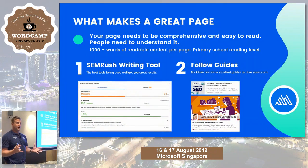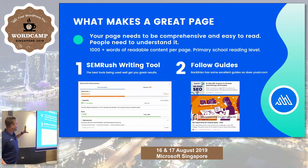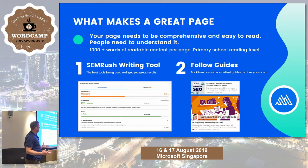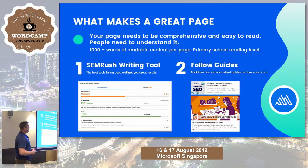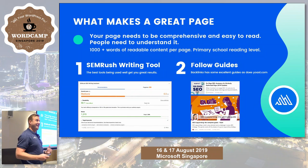Once I've got my keyword research, I need to actually make a great page. In WordPress there are free tools for that. One I really love right now is the SEMrush writing tool — you put your research into it and it tells you everything you need to do to write your content, including other words to put in and how easy it is to read. Make sure you put headings in. Nobody likes a big block of text with no paragraphs and subheadings. No more than 250 words between subheadings.